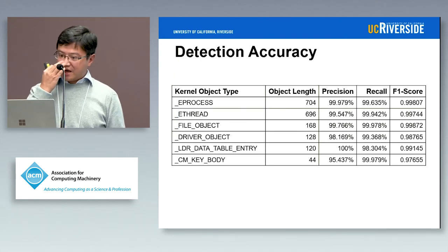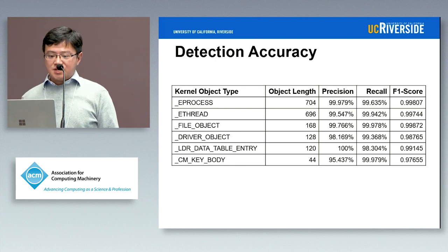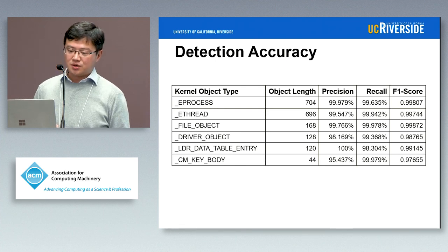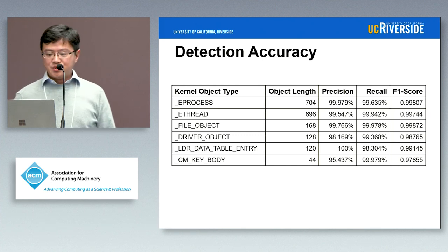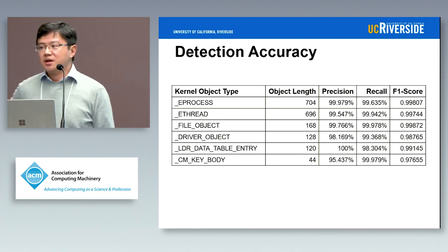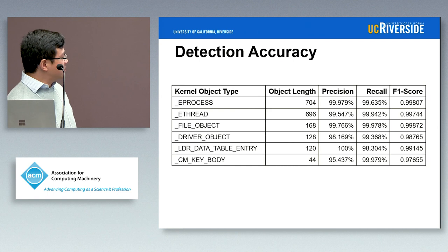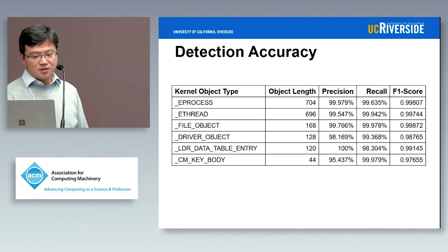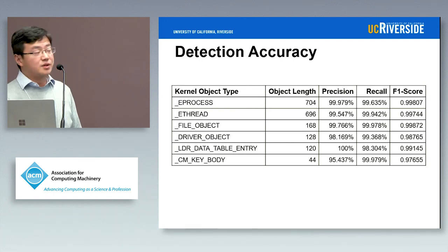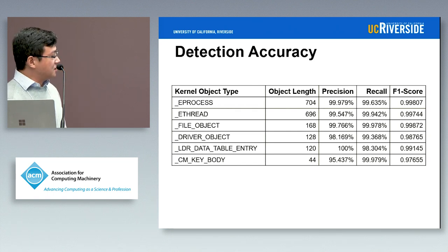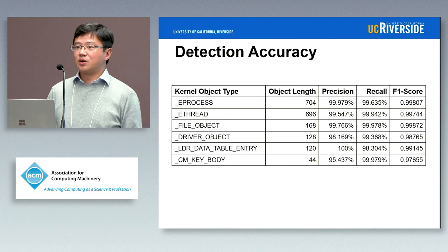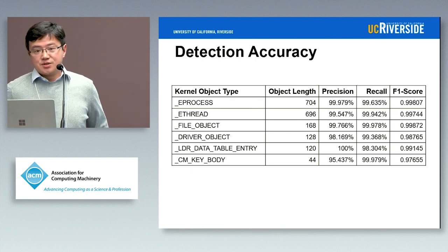For accuracy, we look at six kinds of objects in the Windows kernel — ordered from largest to smaller objects. Precision and recall are generally very high. For some smaller objects, like one that's only 44 bytes, precision is a little bit lower than for the others, but in general the accuracy is pretty good.